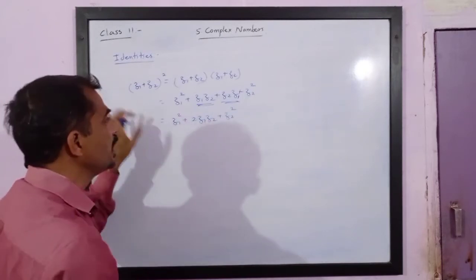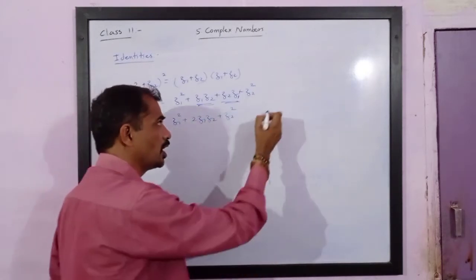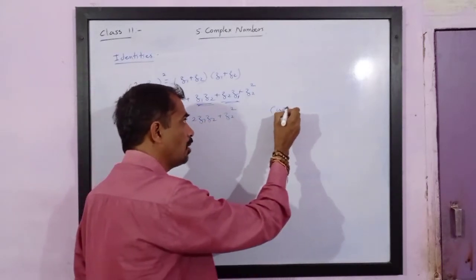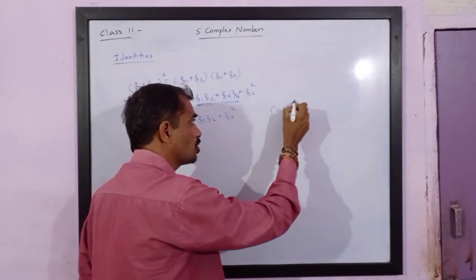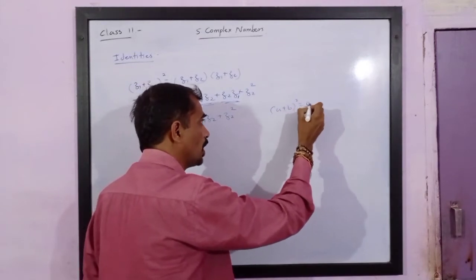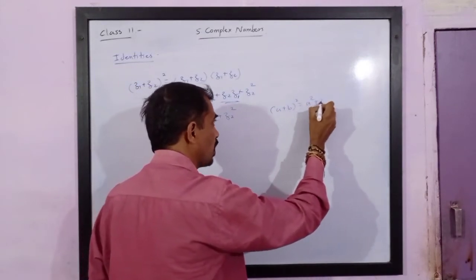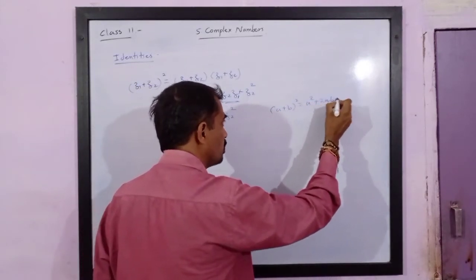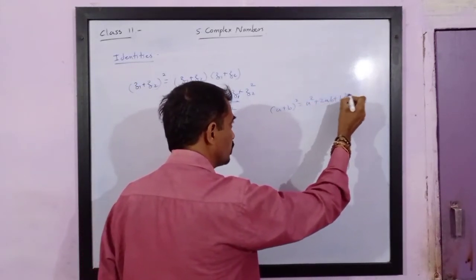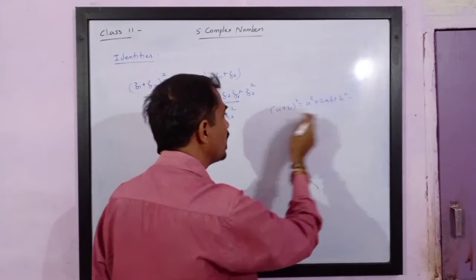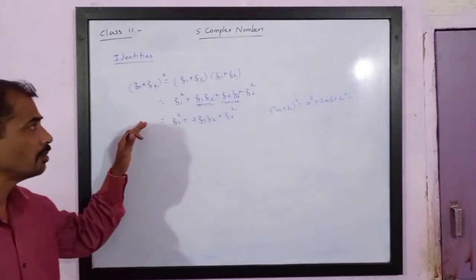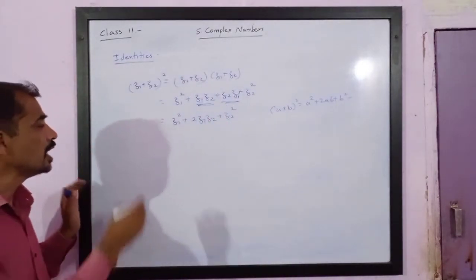So this becomes z1² + 2z1z2 + z2². Please note, this identity is similar to our (a + b)² = a² + 2ab + b². So the same identity holds for complex numbers as well.